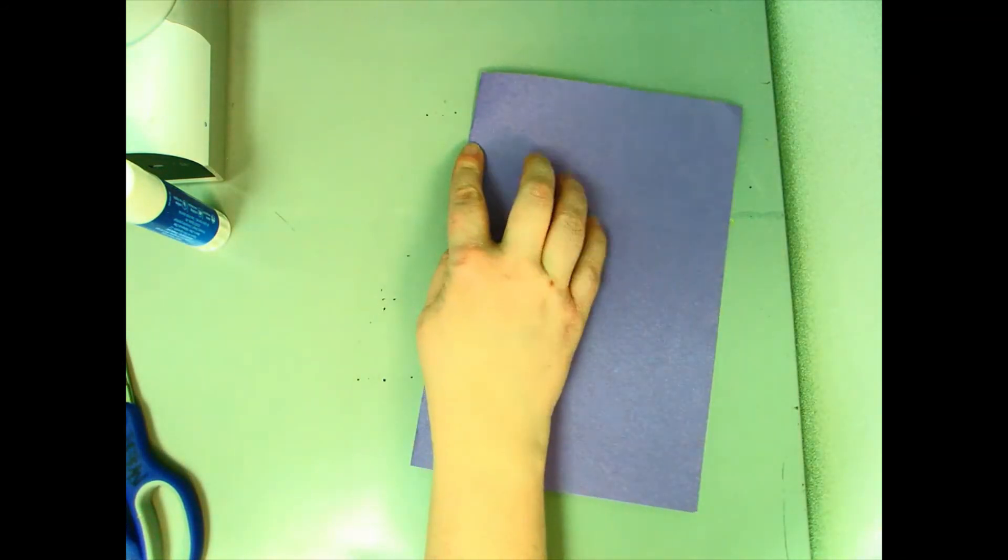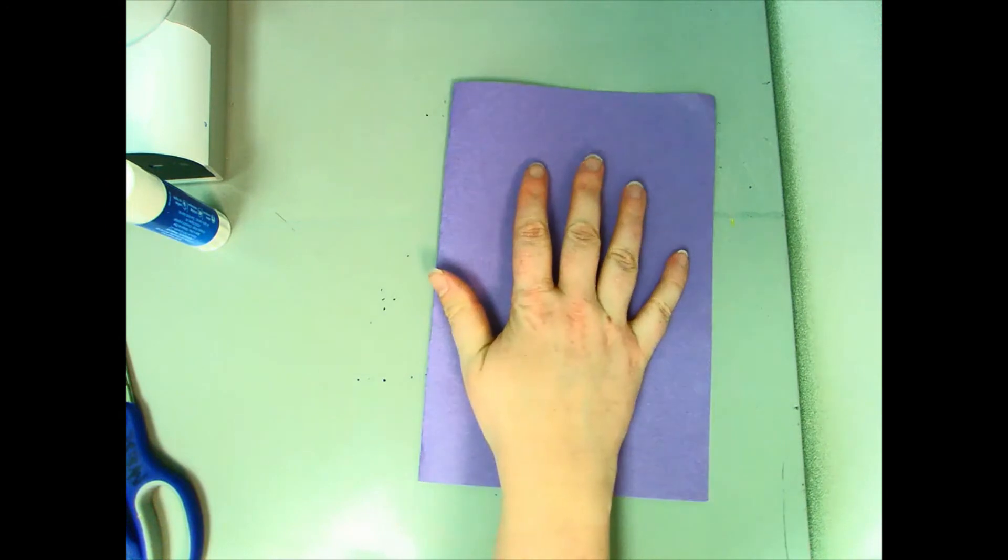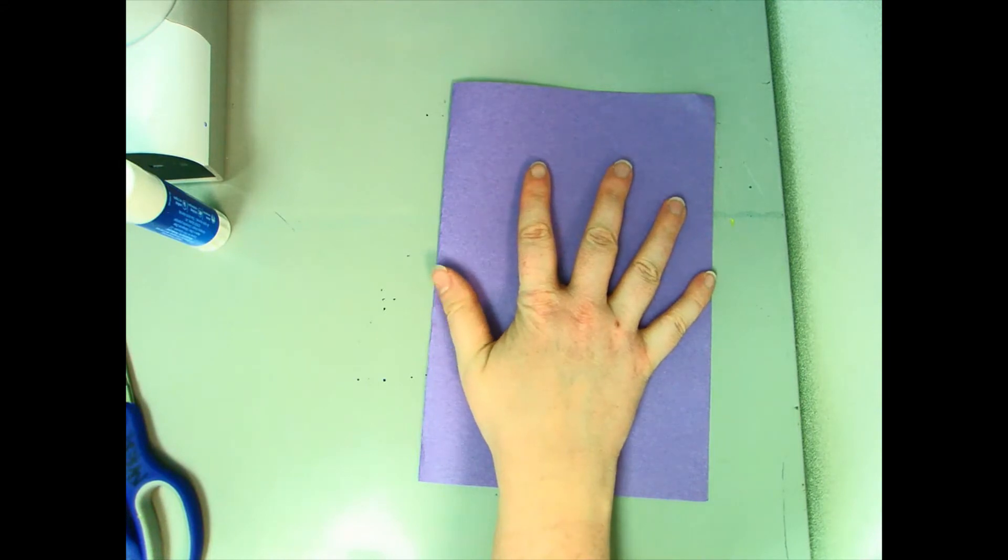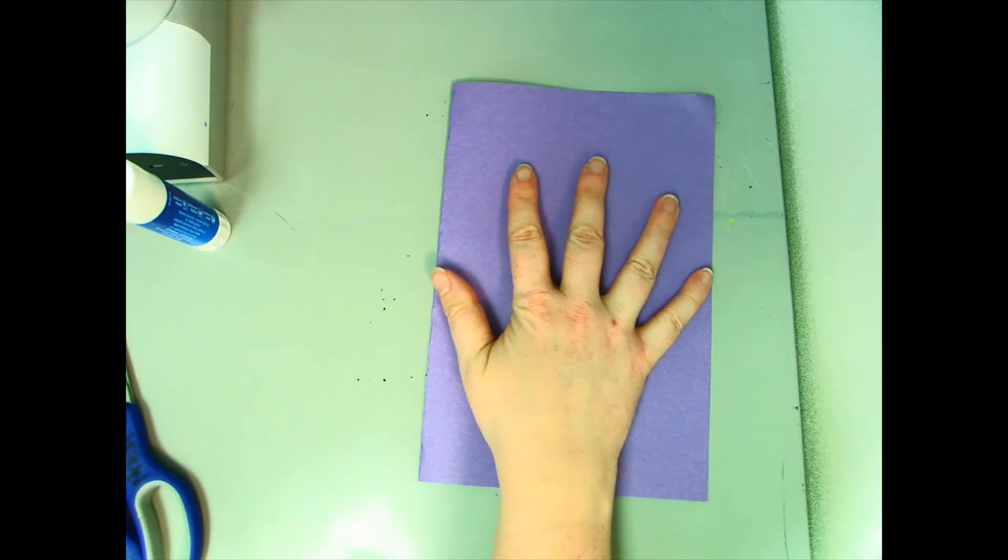When I traced my hand on the red paper I had my hand sort of like that so my fingers were a little closer together. This time I'm going to spread them out a little bit more but I want to make sure that my fingers stay on the entire page. You're gonna have an easier time of this because your hands are a little bit smaller. So let's get started.